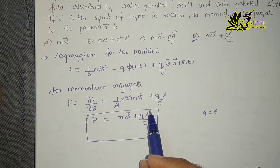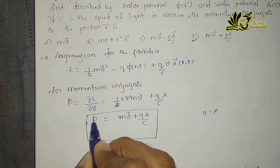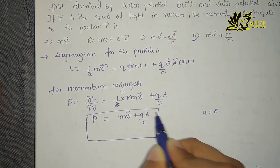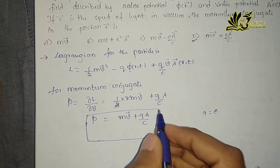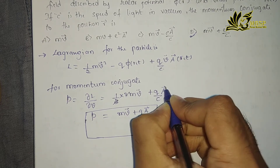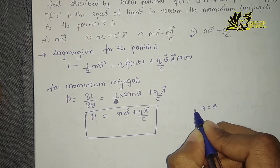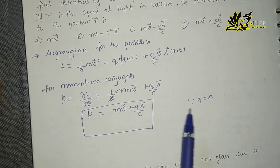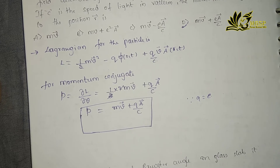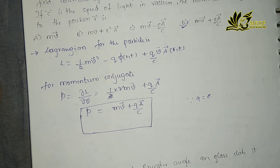You will end up with the expression mv. The conjugate momentum is p = mv + (q/c)A, where q = e. Here I have taken the general case of the Lagrangian, differentiated it, and the matching answer is D, so option D is the correct one.